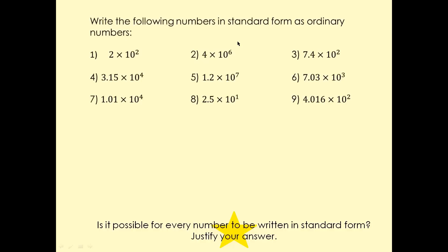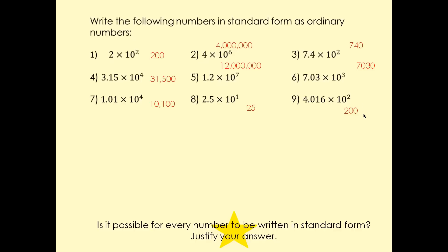Now I have some questions for you — pause the screen, do them, and we'll discuss the answers in a minute. So the answers: 200; then 400,000; and 740. The answer for this one is 12. Then 7,030. And 25. One answer here is wrong — the correct answer is 401.6.